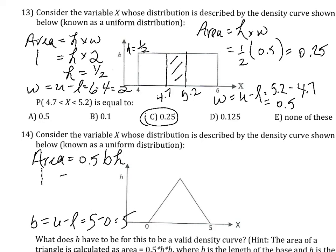We have the area, and all we need is the height. The height must be 1 over .5 over 5, which is equal to 0.4. So, the answer is B.